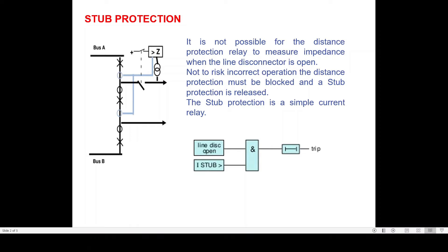But if you see, when the 89L isolator is open, that means this feeder is definitely out of service. If this feeder is not in service, why do you require any protection? The reason is that even though this feeder is not in service, if you have closed these three circuit breakers, you now have a section between these two buses. Whenever there is a fault in that section, you have to isolate this fault also, and to isolate this fault you need a protection system.